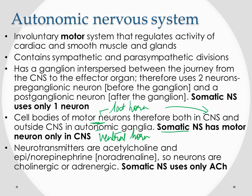The somatic nervous system uses only acetylcholine as its neurotransmitter. The autonomic nervous system uses acetylcholine and also epinephrine (adrenaline) and norepinephrine (noradrenaline). Neurons using acetylcholine are called cholinergic; neurons using epinephrine or norepinephrine are called adrenergic.